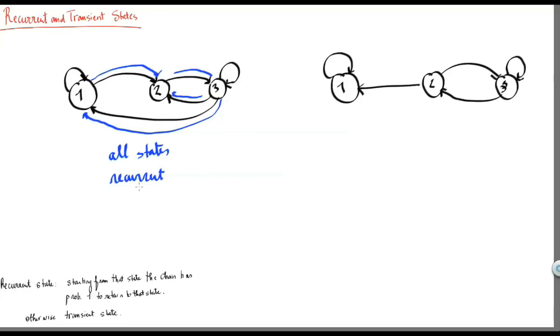If we look at the second example, we can see that the system may start at state 2, for example. It may shift between 2 and 3 for quite some long time, but once it leaves state 2 and goes to state 1,